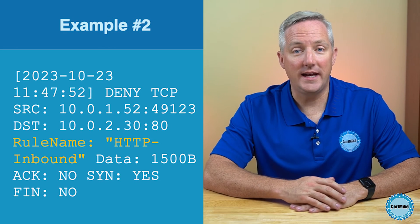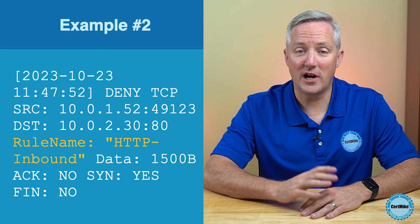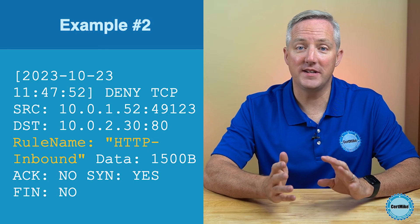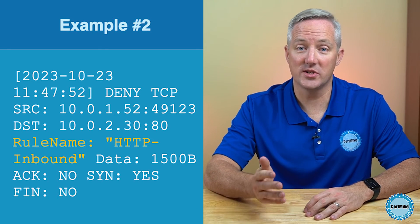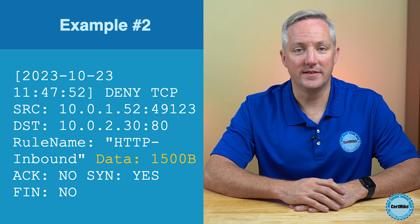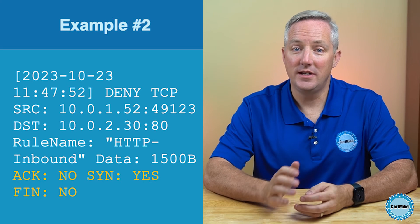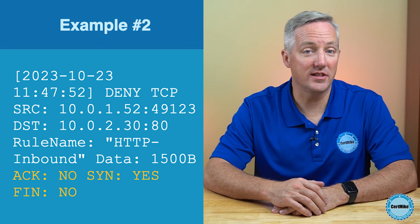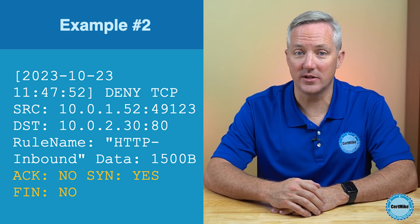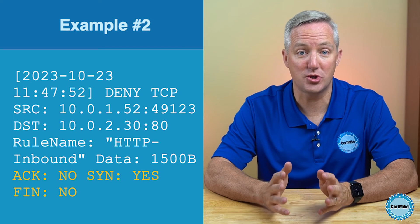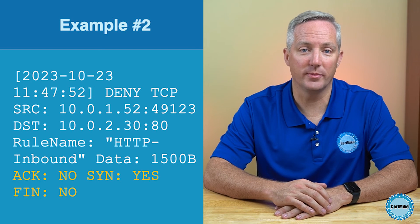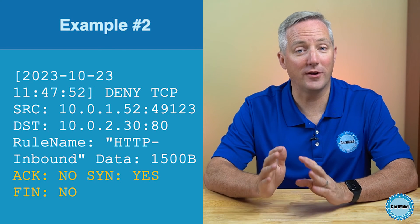Next, we have rule name "HTTP inbound" — the identifier of the firewall rule that was triggered. This rule specifies conditions for inbound HTTP traffic, which the firewall was set to block. The data packet size is 1500 bytes. Finally, we see the TCP flags. ACK-NO signifies that this packet isn't acknowledging the receipt of another packet. SYN-YES indicates that the packet is attempting to establish a connection — it's part of the initial handshake in TCP communication. FIN-NO tells us that the packet isn't trying to terminate a connection; it's part of a communication setup.